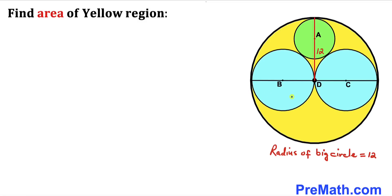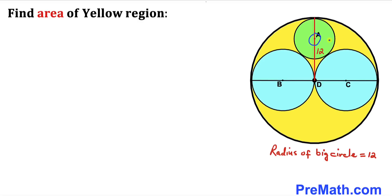Welcome to pre-math. In this video we have got two blue identical circles as well as a green circle inscribed in a big circle, such that all these circles are tangent to each other. The radius for this big circle is 12 units. D is the center for the big circle, B and C are the centers for the blue circles, and A is the center for the green circle. We are going to calculate the area of this yellow shaded region.